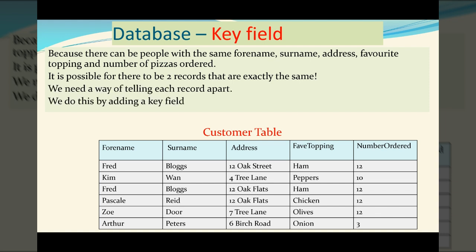So we need a way of telling each record apart. We do this by adding a key field. We just need a field that will allow us to uniquely identify each record. So the easiest solution is to use a number, a customer number. Each customer now has a unique number. So we've got customer number one, which is a Fred Bloggs, customer number three. That way we can tell which Fred Bloggs is which.